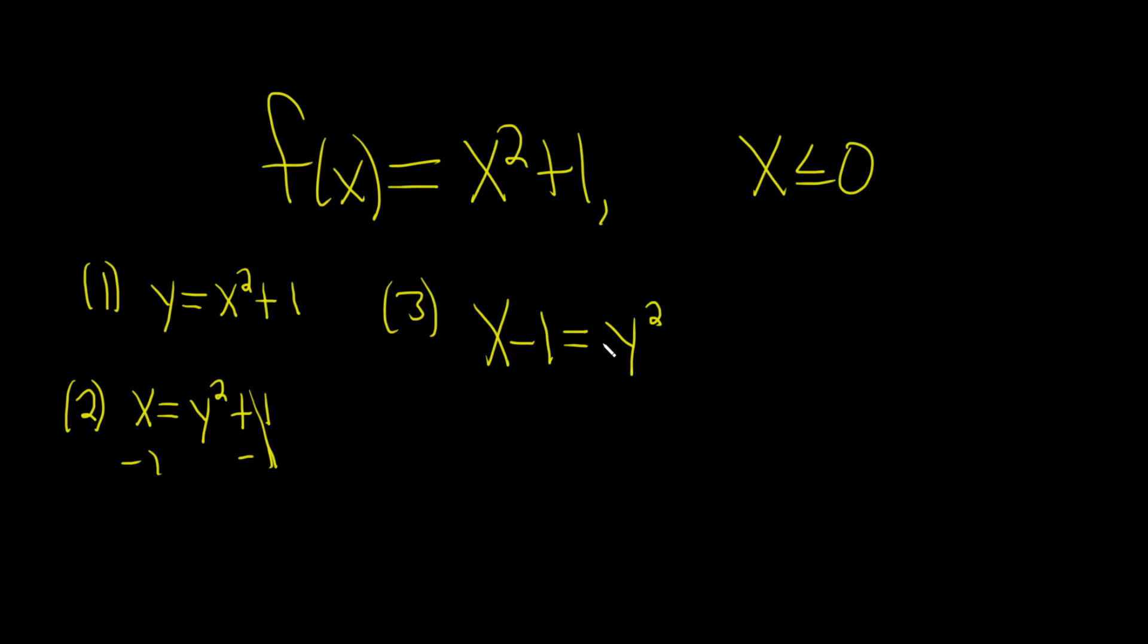Now we take the square root of both sides. The square root property says whenever you take the square root of something squared, you get a plus or minus.